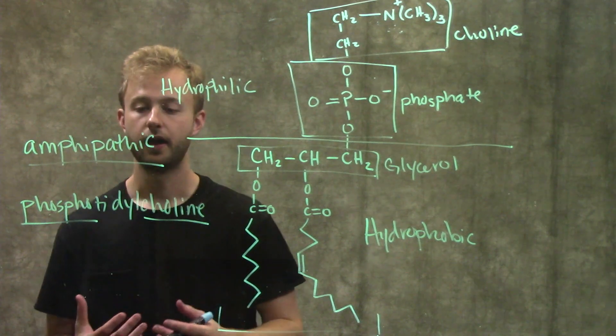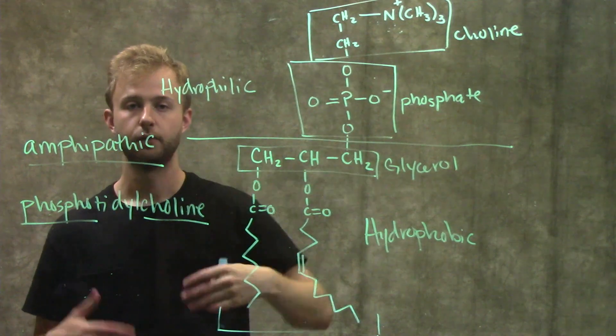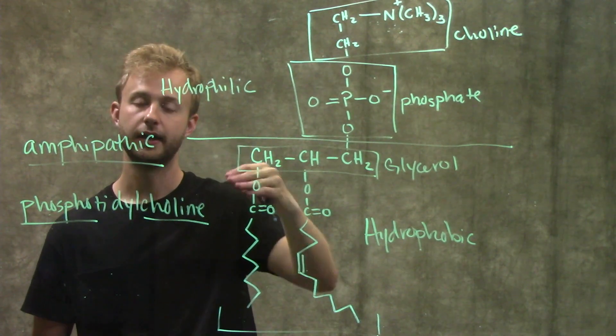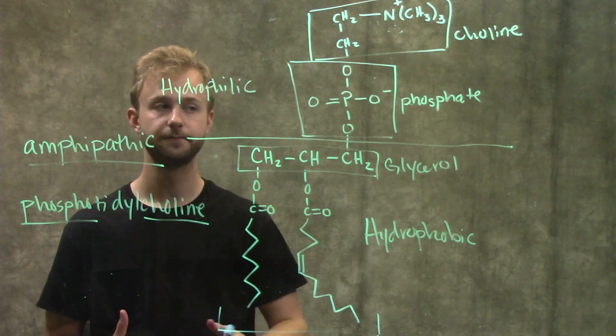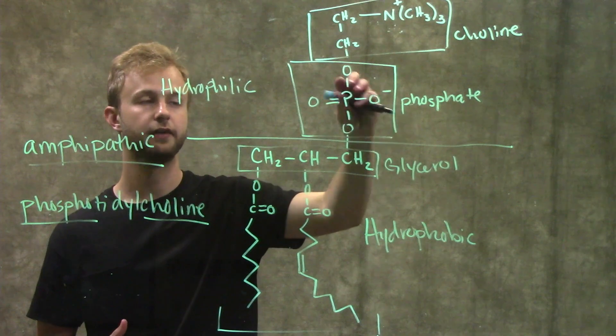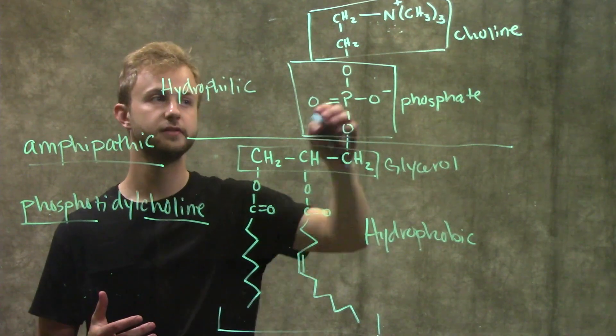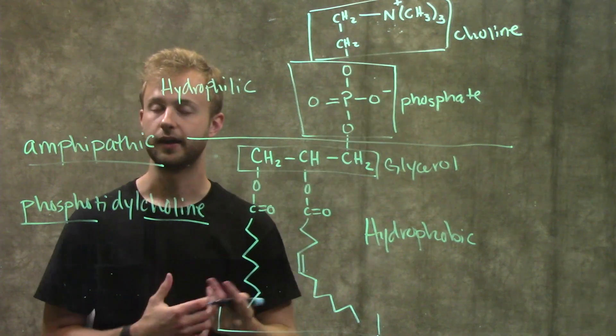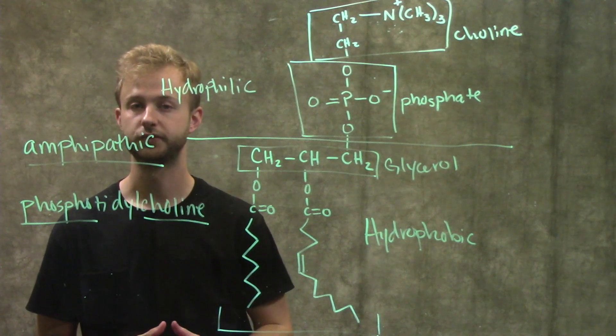And so just to review we have a hydrophobic portion, a hydrophilic portion, which makes the molecule amphipathic. In the hydrophobic portion we have our glycerol and our two fatty acids which don't necessarily have to be the same but they can be. And then in our hydrophilic portion we have our phosphate group which is also constant from all phospholipids and then we have something attached to that phosphate group. In this case it's choline but that won't always be the case, it can be a variety of other groups.